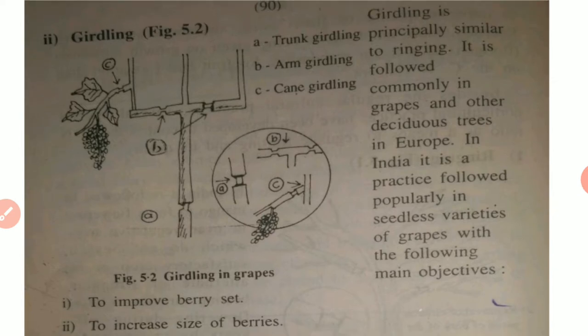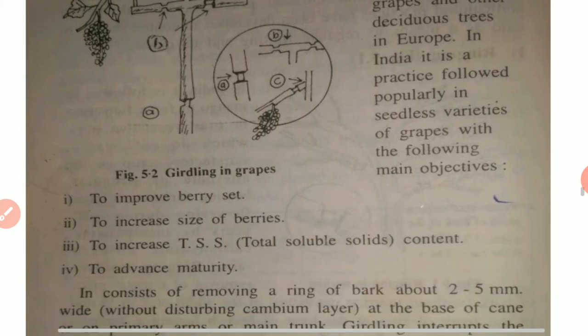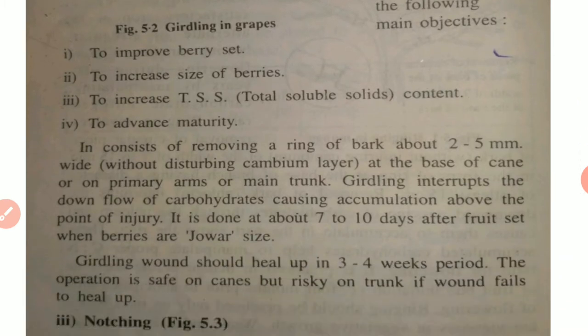Here is the diagram of girdling where we can see three types: trunk girdling, arm girdling, and cane girdling. Trunk girdling is mainly done on the trunk, while arm girdling and cane girdling are done to younger branches. It consists of removing a ring of bark about two to five millimeters wide.